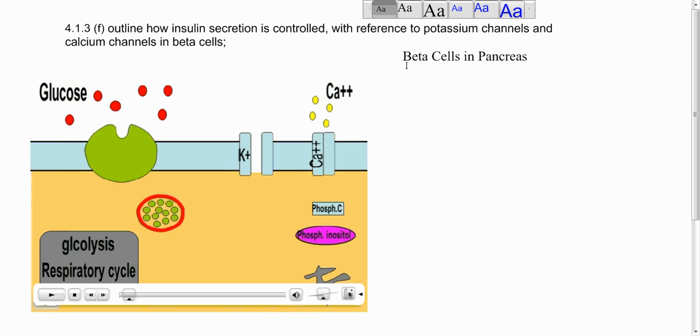Beta cells release insulin and there are also alpha cells but they release a different hormone. We'll talk about that a little bit later on. So this cell in this animation is a beta cell. We're going to start with the situation in this body with this cell where glucose levels have risen.